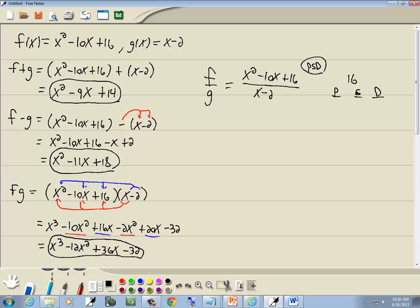We're going to write down our three columns. P column is all the products that give you 16: 1 times 16, 2 times 8, 4 times 4. S column, we add those: 1 plus 16 is 17, 2 plus 8 is 10, 4 plus 4 is 8. Difference column, we subtract smaller from larger: 16 minus 1 is 15, 8 minus 2 is 6, 4 minus 4 is 0. The number we're looking for is in our middle term, which is 10, so we're going to use 2 and 8.